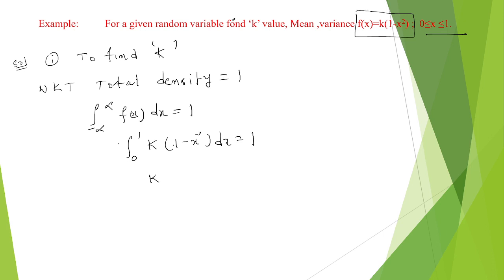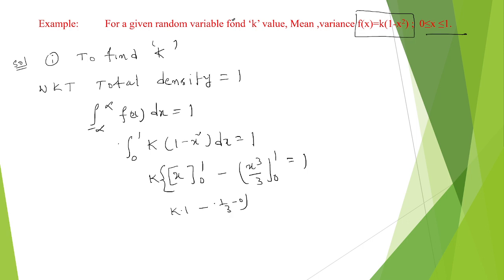Since k is a constant, take k outside. The integration of 1 is x from 0 to 1, and the integration of x squared is x cubed by 3 from 0 to 1. Substituting the upper limit: k into (1 minus 1 by 3) equals 1, so k into (2 by 3) equals 1, therefore k equals 3 by 2... that is k equals 4 by 3.